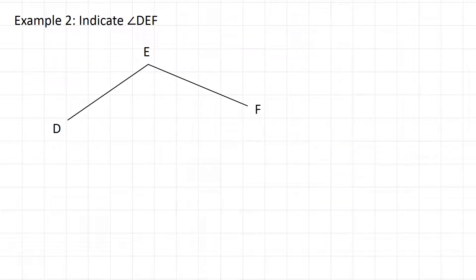Here's a quick example. Let's indicate angle DEF. And all that means is indicate where along these lines is angle DEF. So we're starting at D, we're heading to E, and then we're taking off to F. So the angle that we're interested in is the angle that connects the rotation between those two lines.